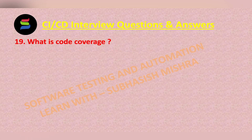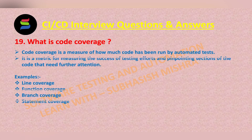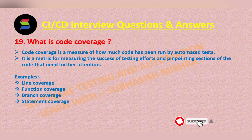What is code coverage? Code coverage is a measure of how much code has been run by automated tests. It is a metric for measuring the success of testing efforts and pinpointing sections of the code that need further attention.